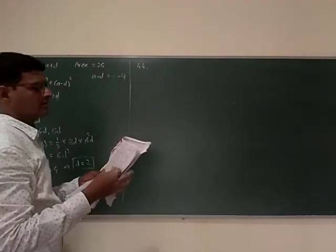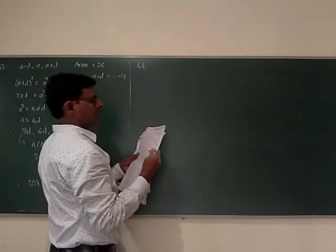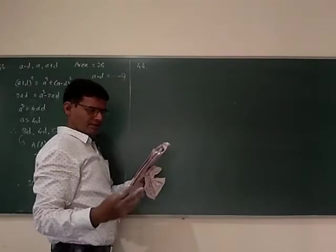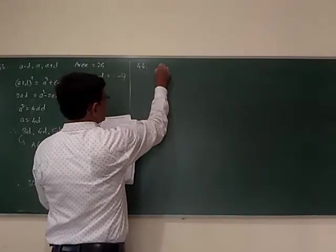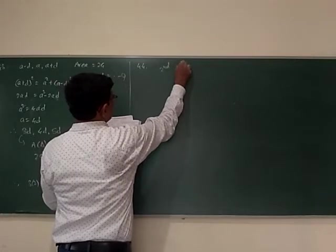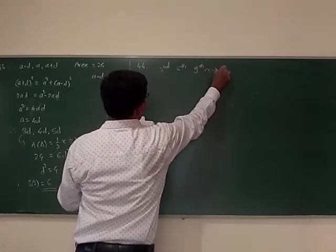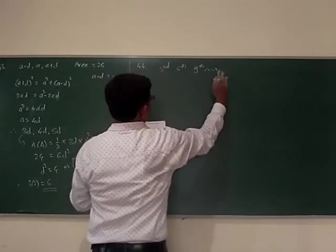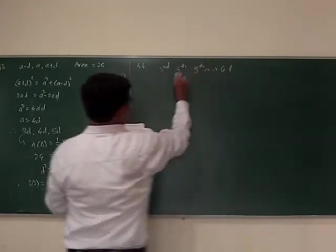Question 44: The 2nd, 5th and 9th terms of a non-constant arithmetic progression are in geometric progression.